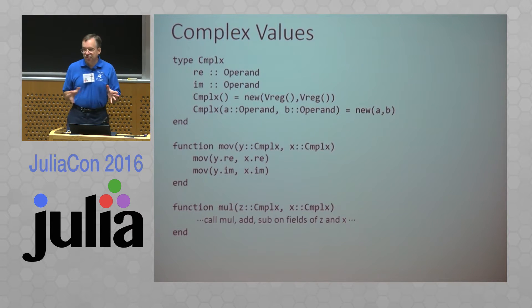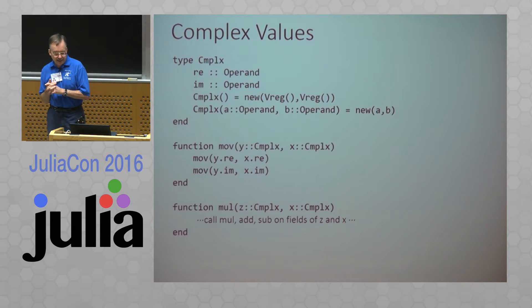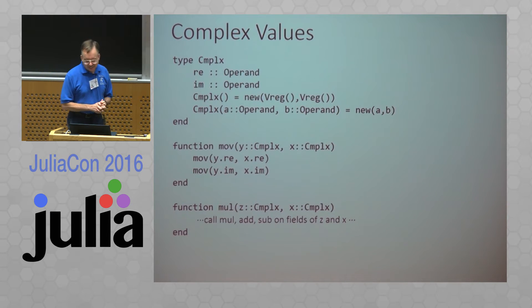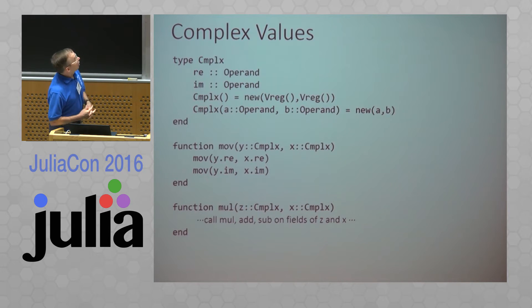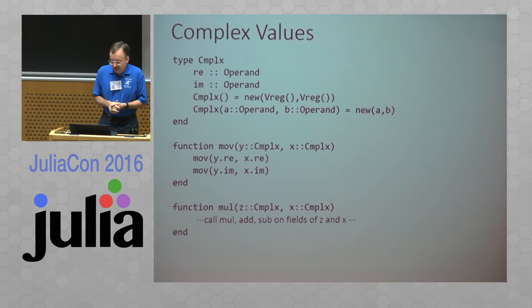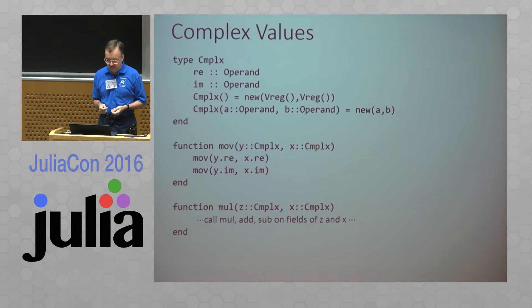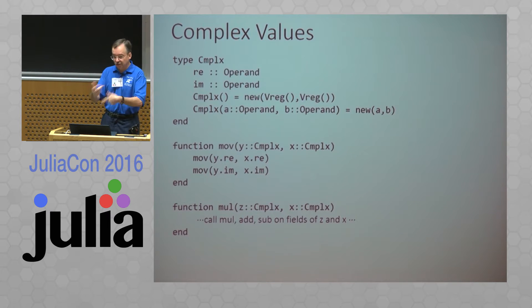This is dealing with a complex value domain — this is a video game where the output is on a complex plane, which is a little unusual. A complex value is simply the real and imaginary parts as operands. To move a complex number you move the two pieces. To multiply two complex operands it's a little more complicated — I don't show the code there — but I have an overload that calls the other overloads to add, subtract, and multiply. It all works nicely.